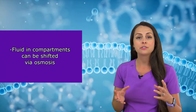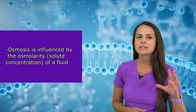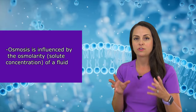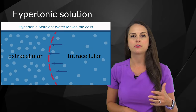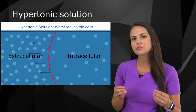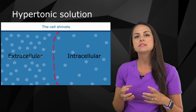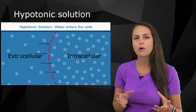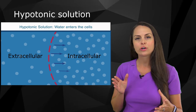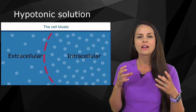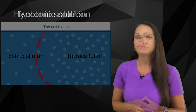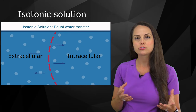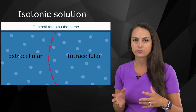Fluid within these compartments can be shifted through osmosis, which is highly affected by the osmolarity of the extracellular fluid. In a hypertonic environment — high solute concentration — fluid is pulled from inside the cell to outside, causing the cell to shrink and dehydrate. In a hypotonic environment — low osmolarity — water moves into the cell, causing it to swell and possibly rupture. In an isotonic environment, solutes are equal on both sides, so there's no drastic shifting of water.